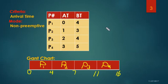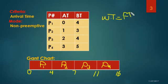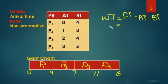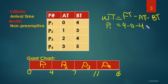Now I have to find the waiting time for each process — P1, P2, P3, and P4 — separately. The waiting time formula is: finishing time minus arrival time minus burst time. For P1, the finishing time is 4, the arrival time is 0, and the burst time is 4. So the waiting time for P1 is 4 minus 0 minus 4, which equals 0.